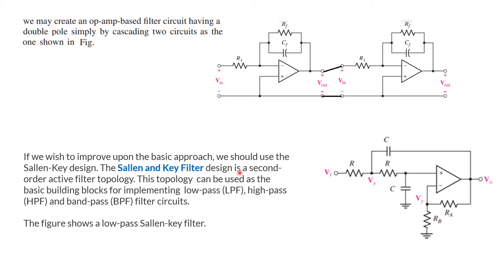The Sallen-Key filter design is a second-order active filter topology. This topology can be used as a building block for implementing a low-pass filter, high-pass filter, or band-pass filter, etc. In the figure, we have shown a low-pass Sallen-Key filter.